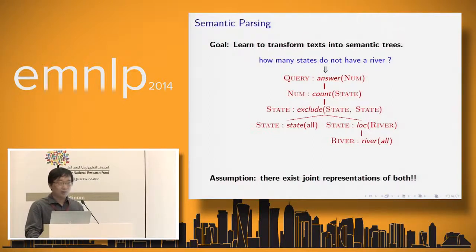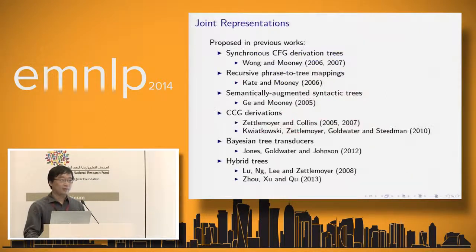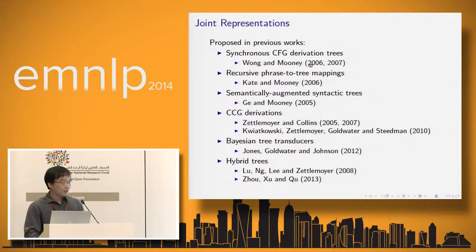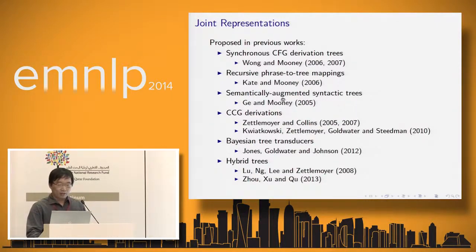To achieve this goal, we need to make some assumptions about how to establish connections between words and semantic units — we need to build a joint representation for both text and semantics. In prior work, researchers proposed using a machine translation model with synchronous CFG derivation trees, a recursive phrase-to-tree mapping, and an integrated syntactic and semantic tree representation for both semantics and text.